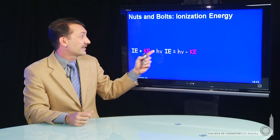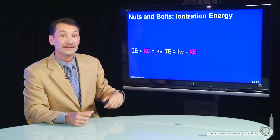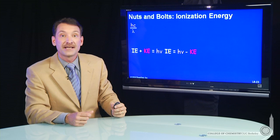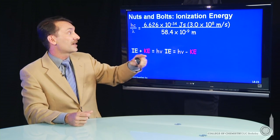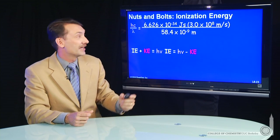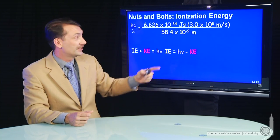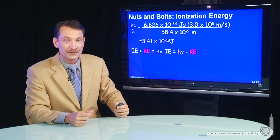So from that and the photon energy, I can calculate the ionization energy. So the photon energy I'll cast in terms of the wavelength, because that's the parameter I have. Planck's constant times the speed of light divided by the photon wavelength in meters gives me a photon energy of 3.41 times 10 to the minus 18th joules.